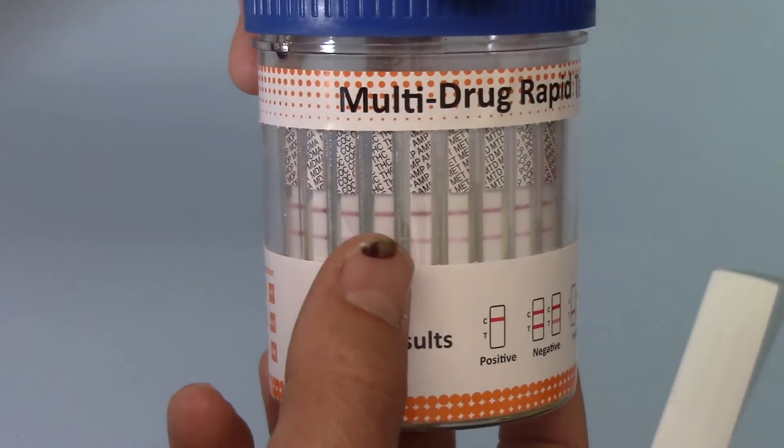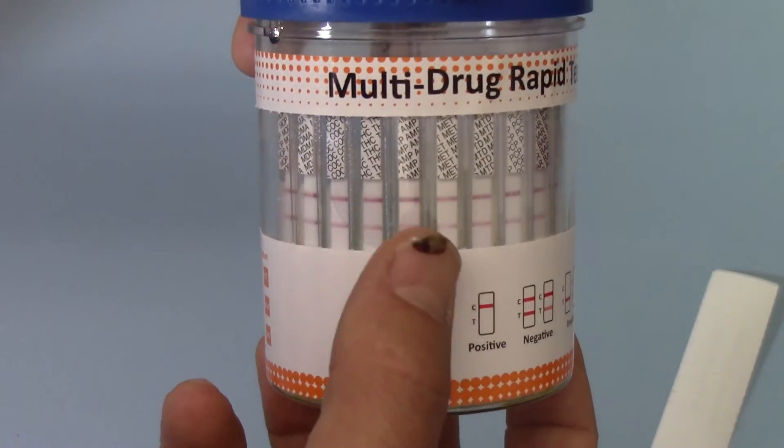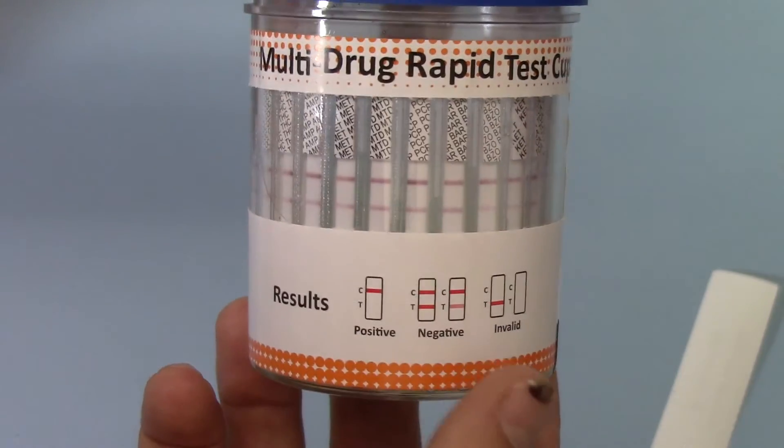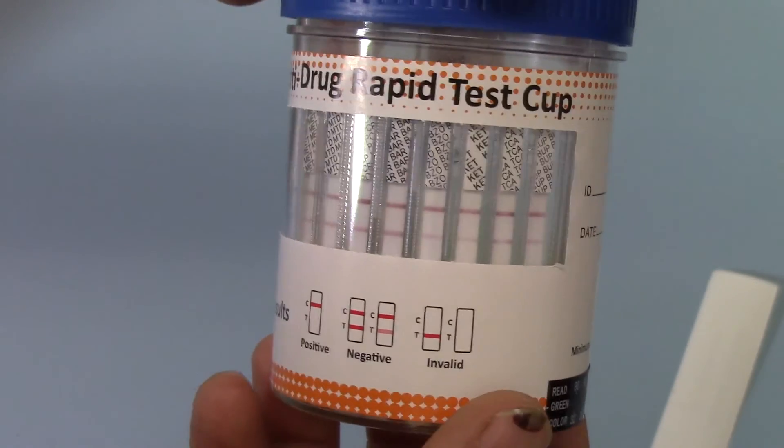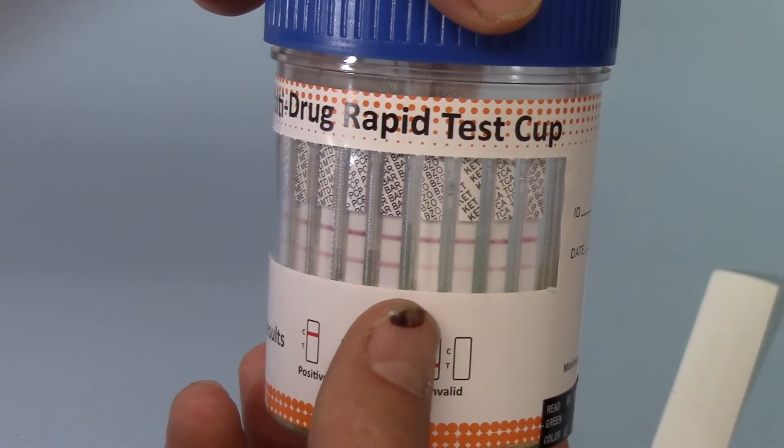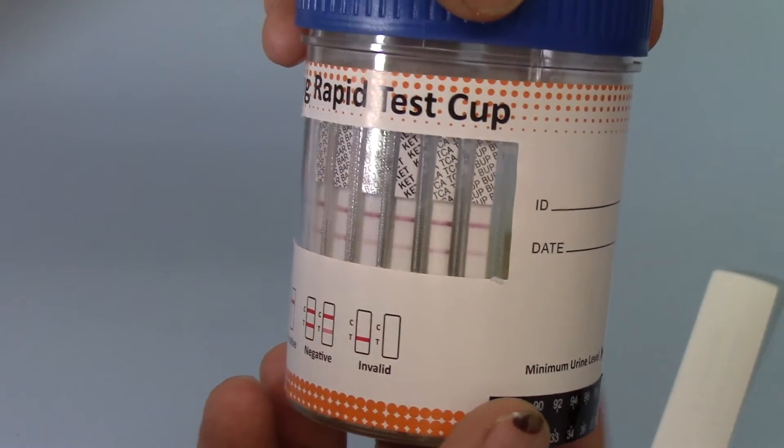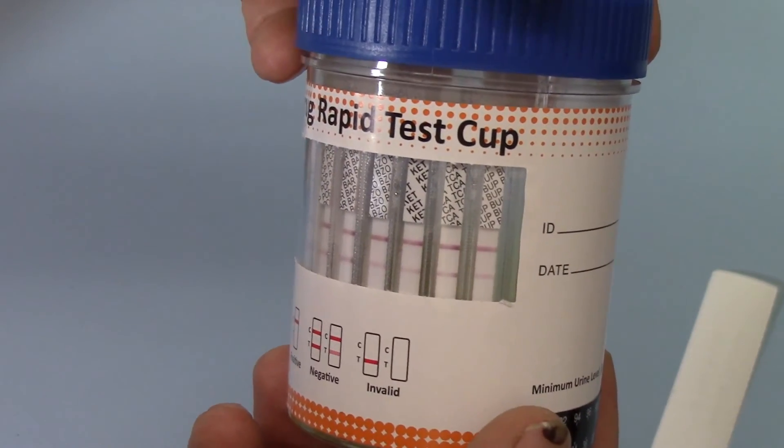All variants of cannabis, AMP for amphetamine, methamphetamine, MTD for methadone, PCP, BAR is barbiturates, BZO is the sedative tranquilizer benzodiazepines, KET is your ketamine screen, TCA is the tricyclic antidepressants,